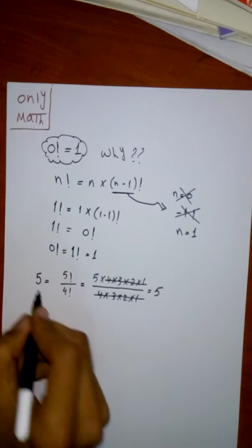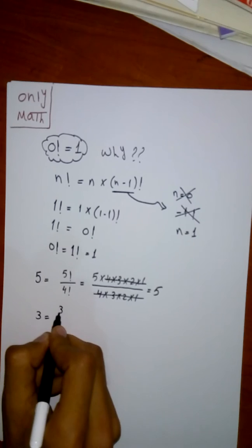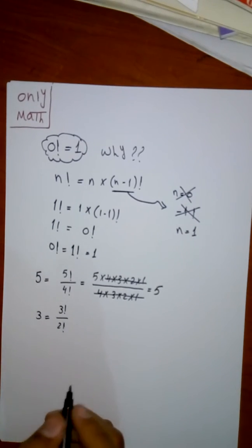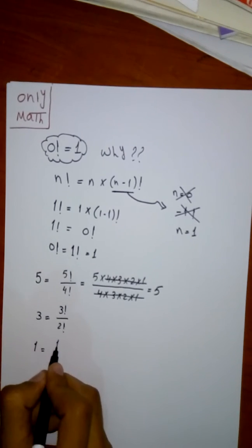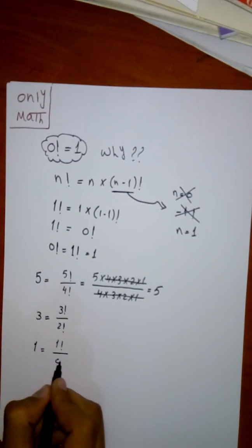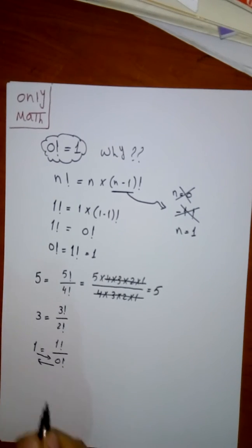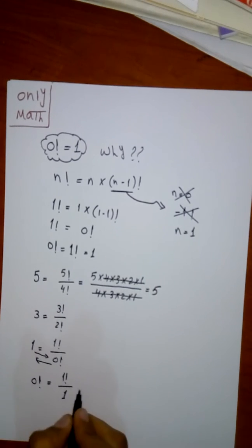Let me apply this on, for example, three. It will be factorial three divided by factorial two. But if we apply this to one, it will be factorial one divided by factorial zero. So we can rearrange this and say that factorial zero equals factorial one divided by one. So the final answer will be one.